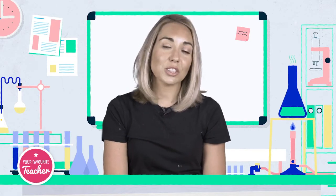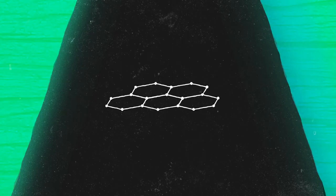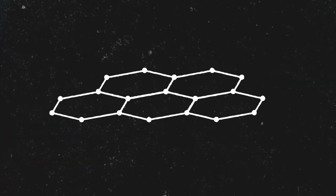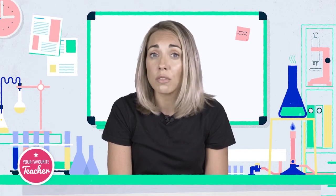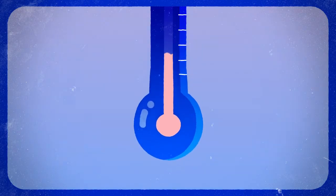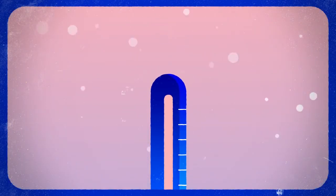The third is graphene. Graphene is one layer of the graphite structure, just one carbon atom thick. Graphene has delocalised electrons making it a very good conductor. It has three strong covalent bonds per carbon atom, causing it to have a high melting and boiling point due to the high number of strong bonds.